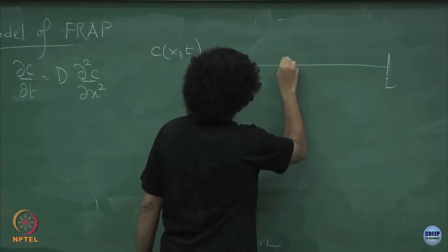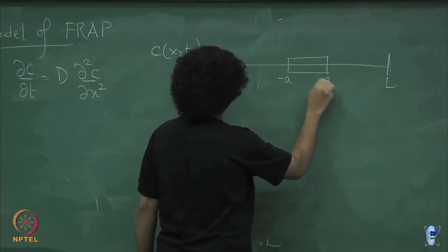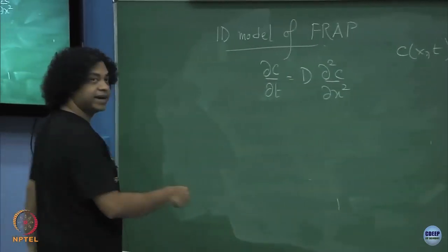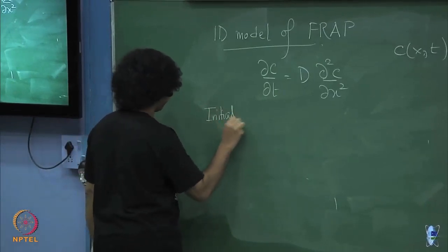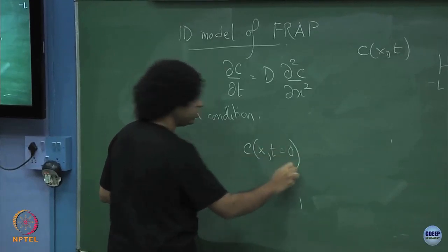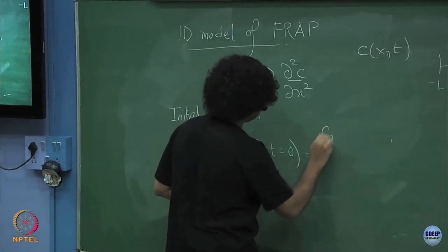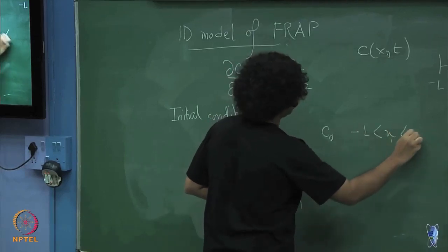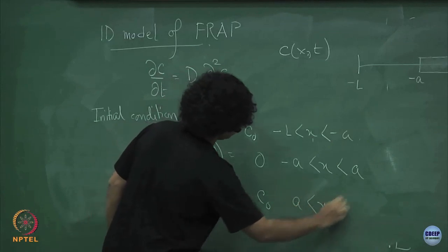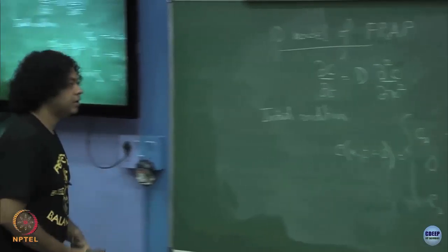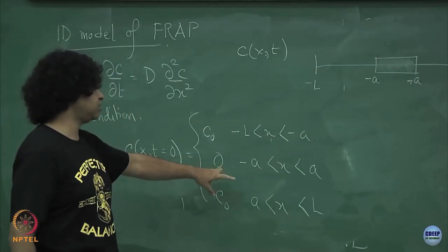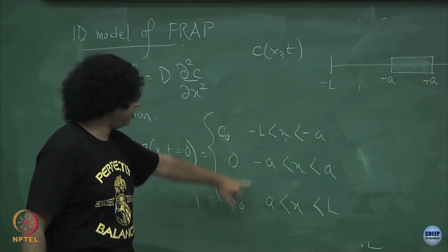I bleach a small region over here — let us say from minus a to plus a — at time t equal to 0. So I will bleach all the fluorescent molecules in this region. What that means is that I can write down an initial condition for this concentration of fluorescent molecules: c(x, 0) equals c naught if minus l is less than x less than minus a; it is 0 for x between minus a to a; and it is again c naught between a to l.